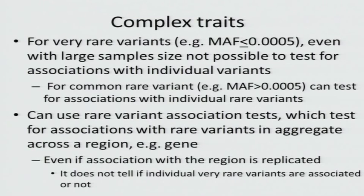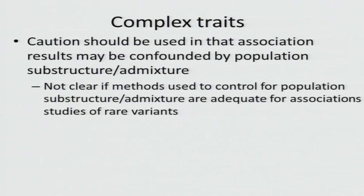Even if we do the right thing—adjust for multiple testing, require a very small p-value, and replicate the region—we still have the problem that because we analyze rare variants in aggregate, we may be able to say something about a gene being involved, but for the very rare variants you really can't say if they're causal or not. Within this aggregate test, of course, you're going to have both causal and non-causal variants.